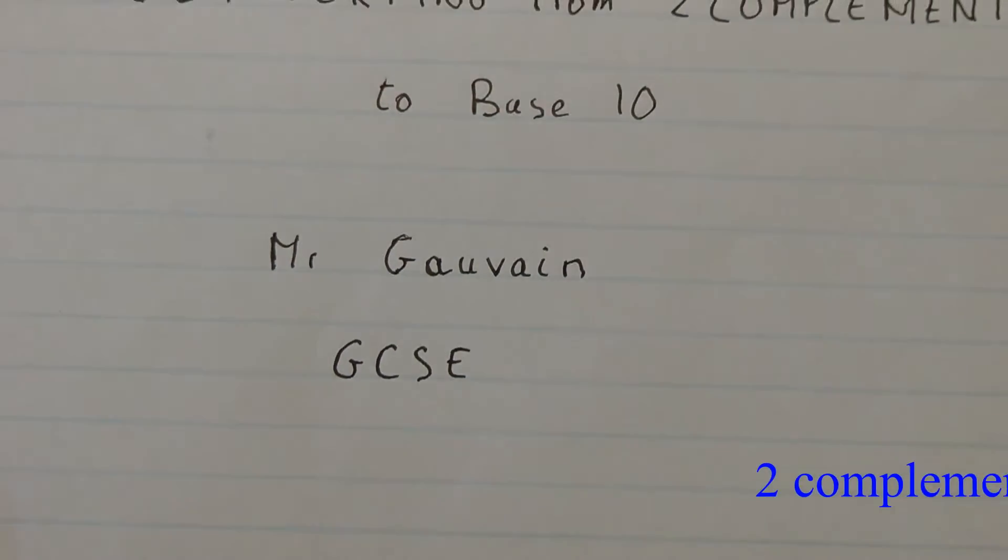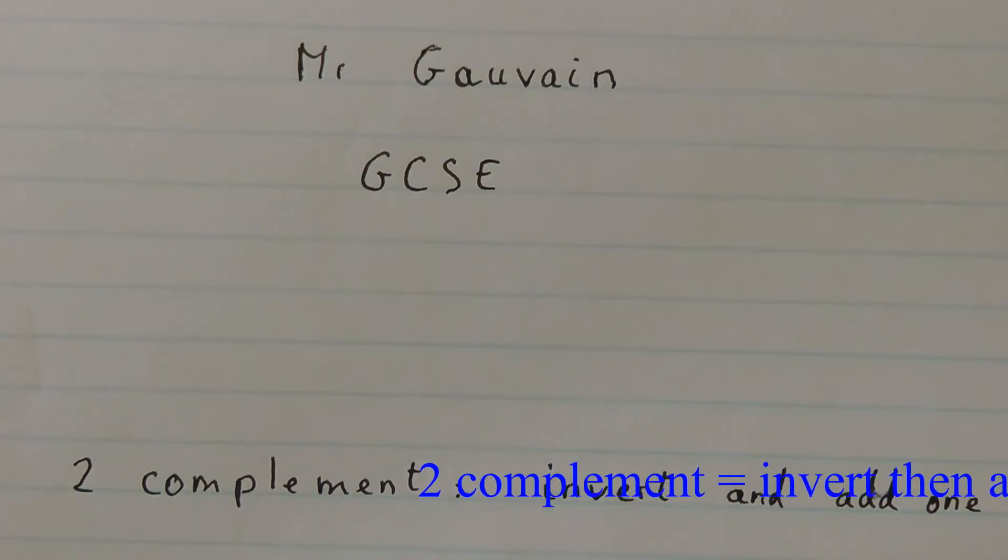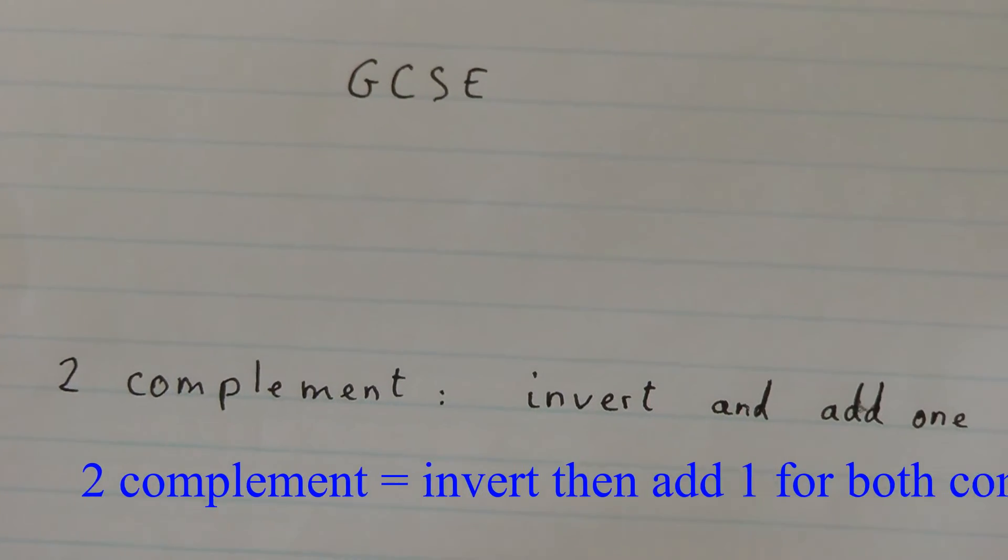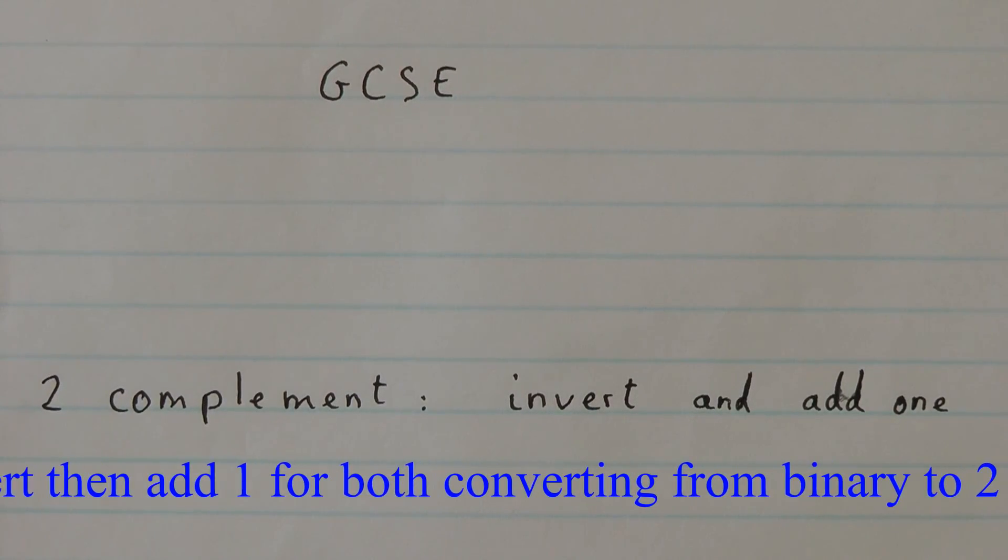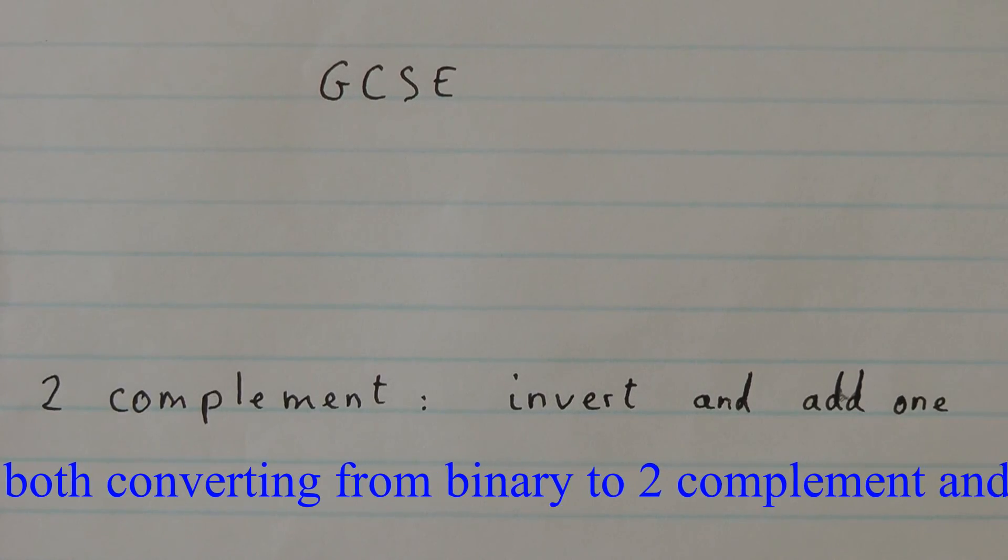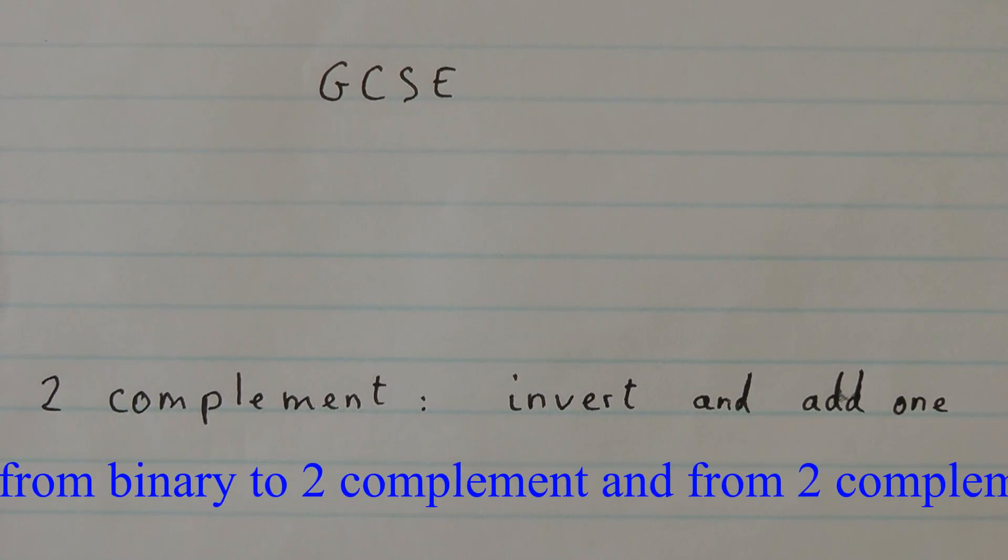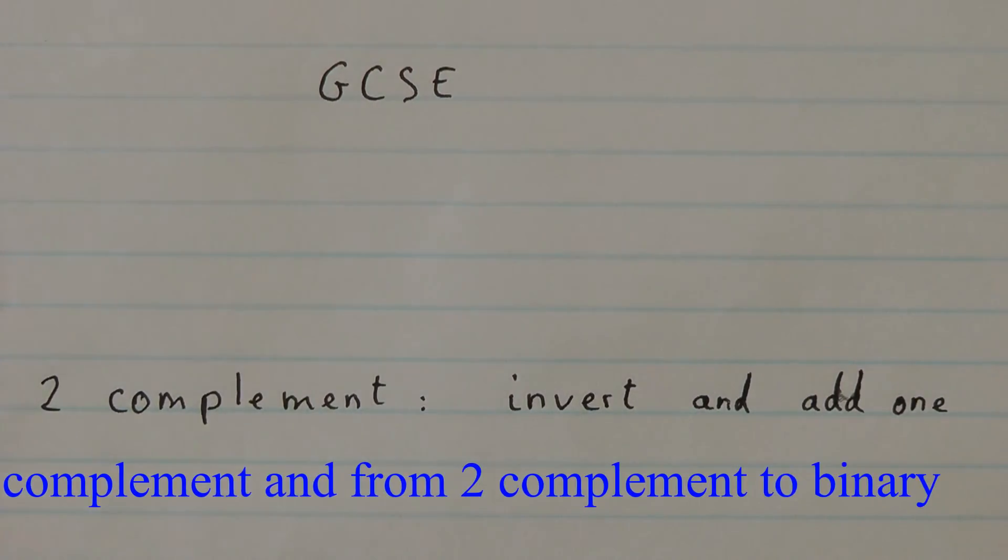Let's recap that two's complement: whenever we have two's complement, we invert and then we add one. And this works for both converting from base 10 to binary and converting from binary back to base 10.